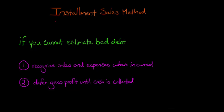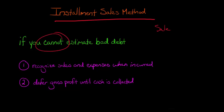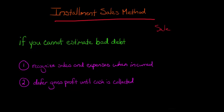In this video, we're going to talk about the installment sales method in accounting. Typically in accounting, when you record a sale, you record some bad debt expense along with that sale — you're assuming a certain percentage of customers aren't going to pay. With the installment sales method, we're saying we can't estimate how much bad debt there's going to be. Maybe it's a franchise agreement or a land development deal, and we have no way of saying how much bad debt we'll ultimately incur. In those cases, we can use the installment sales method.